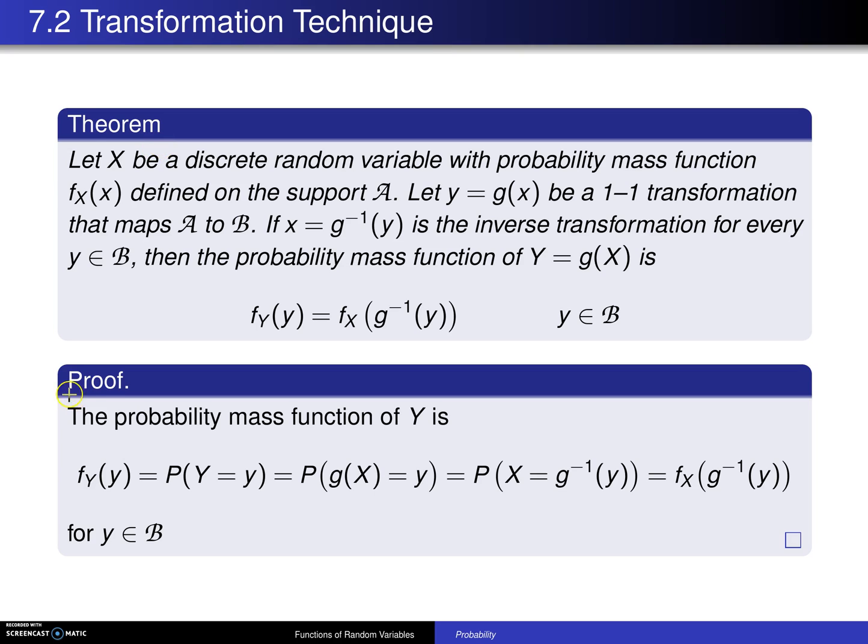Here is a proof of the theorem. The probability mass function of Y is F sub Y of y by the definition of a probability mass function. That is the probability that the random variable Y is equal to y.